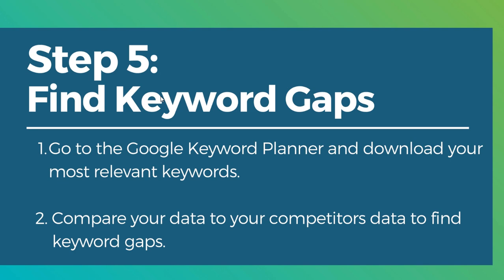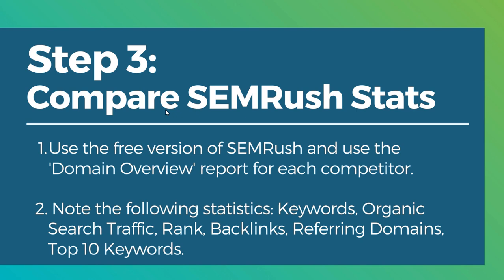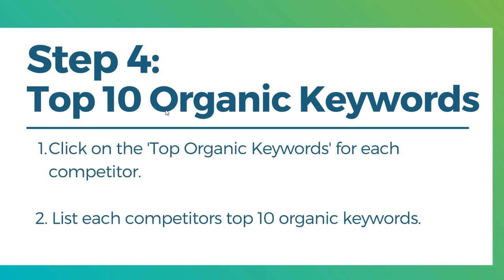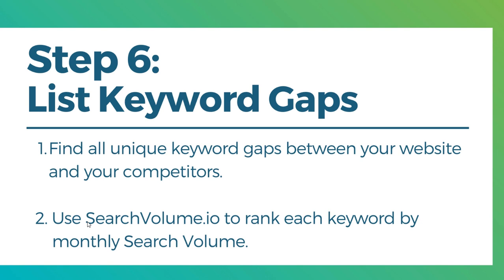Reviewing the steps so far: find competitors, make a list of competitors, compare SEMrush stats, pull the top 10 organic keywords for each website and list them in your spreadsheet, then find keyword gaps using the Google Keyword Planner — download your most relevant keywords and compare them to each competitor, putting that data in your spreadsheet. Last but not least is step six: list keyword gaps and rank them by monthly search volume using a tool called searchvolume.io.